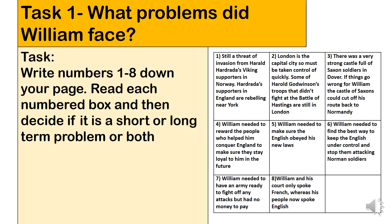Box two: London is the capital city and must be taken control of quickly. Some of Harold Godwinson's troops that did not fight at the Battle of Hastings are still in London. This is clearly a short-term problem — William will go to London after Hastings and quickly deal with any remaining troops, taking control fairly quickly. Go through the rest of the boxes three to eight and decide whether each is short term, long term, or possibly both. Pause the video and spend adequate time going through each box.